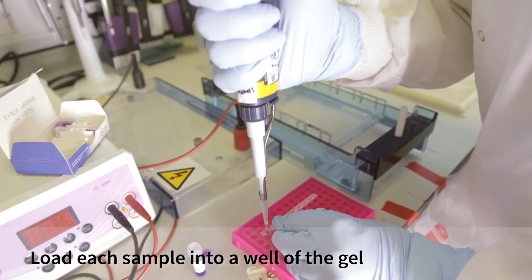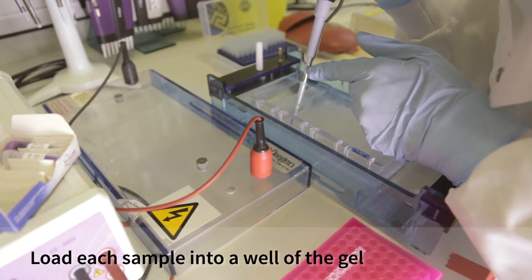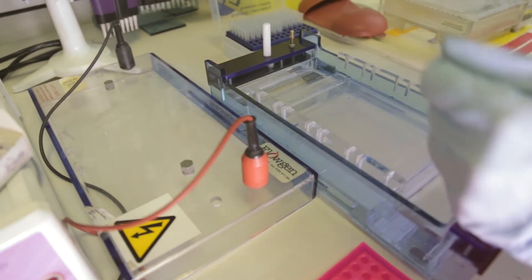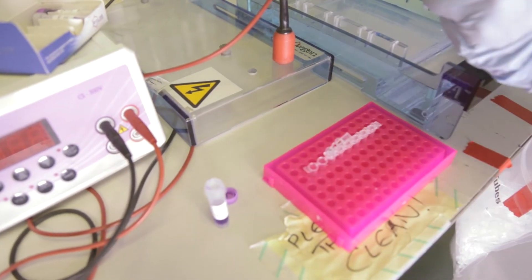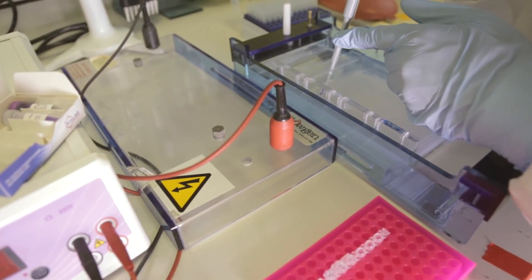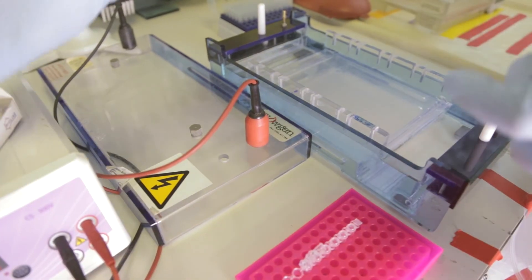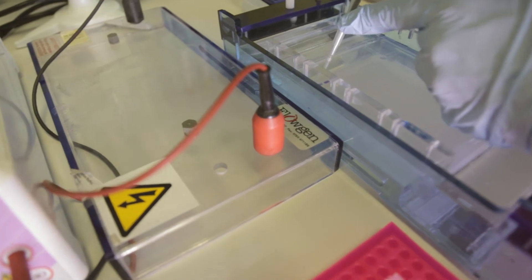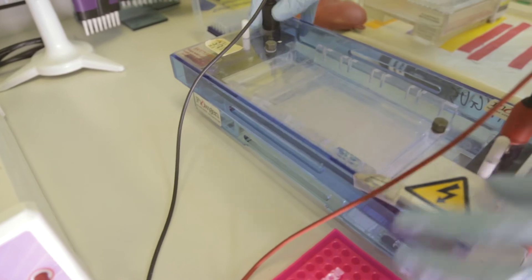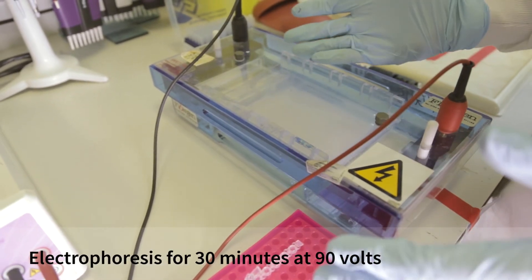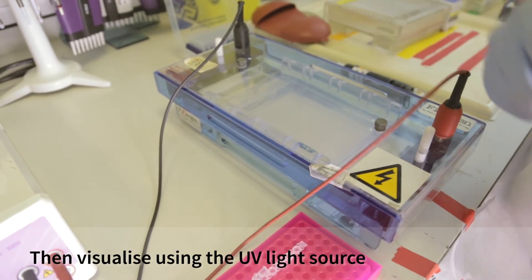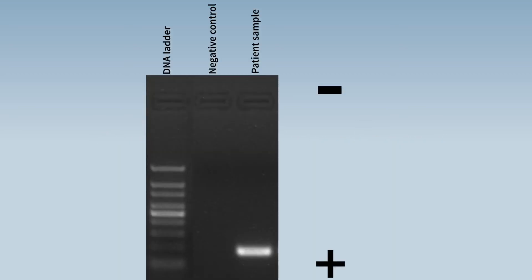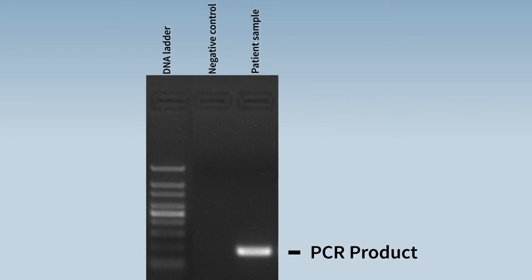We now load our PCR reactions into the gel — first our negative control, then our PCR product containing the APC gene, and we also add a small amount of ladder to enable sizing. We pass a current through the apparatus and leave it for around half an hour at 90 volts. The results of the gel run show the DNA has run from the top to the bottom. On the left we can see the DNA ladder. Our PCR product has run down to a size of 120 base pairs, as expected, and next to it our negative control is blank.